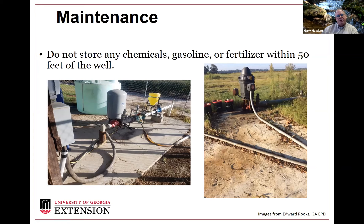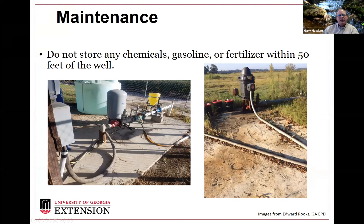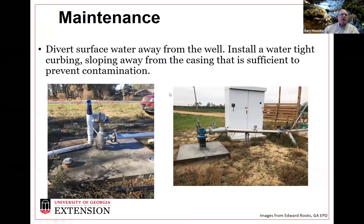One of the things we definitely want to keep away from our wells are chemicals, gasoline, and fertilizers — at least 50 feet away. These two situations probably don't meet that standard. There's a fertilizer tank here that should be in a secondary containment system, because if something happened, that fertilizer could potentially get down the well casing from the top or under the pad. There's also what appears to be gasoline or an organic-based compound stored near the well head, which we definitely want to avoid.